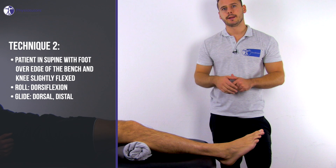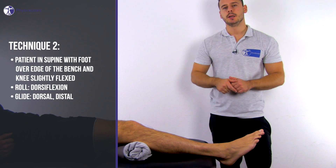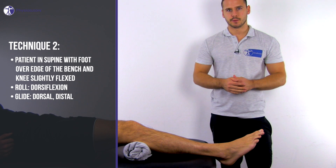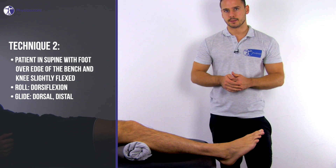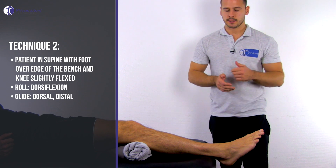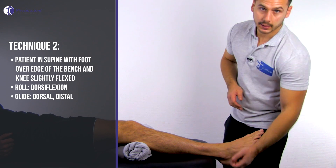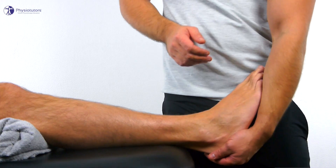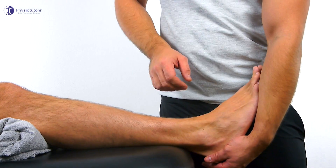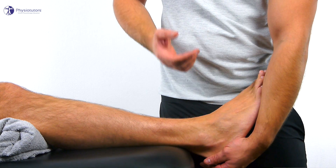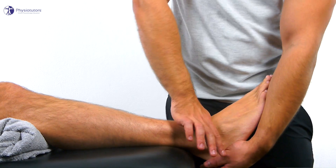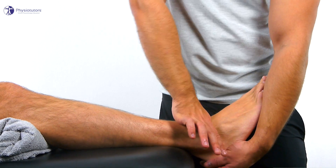Optionally, you can have the patient in supine lying position with the foot over the edge of the bench and the knee slightly bent. Then grasp the calcaneus from plantar to induce the roll, and add the gliding component into the dorsodistal direction at the talus with the other hand.